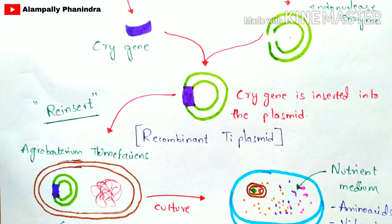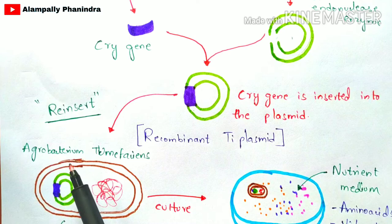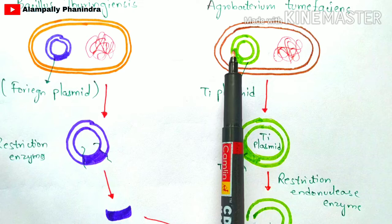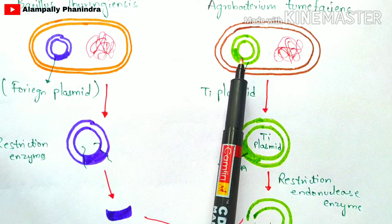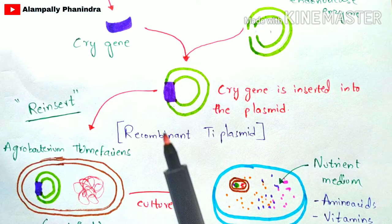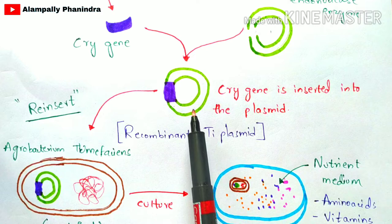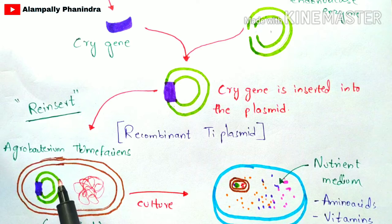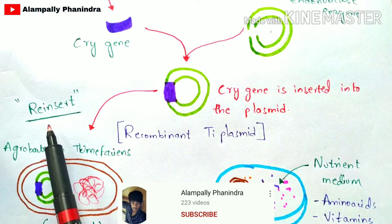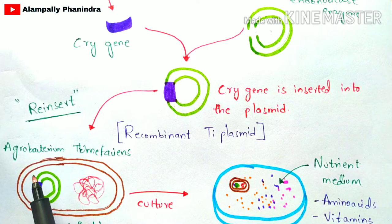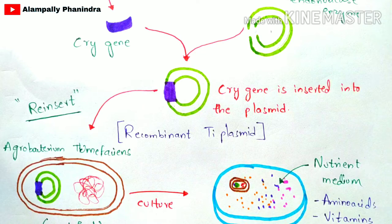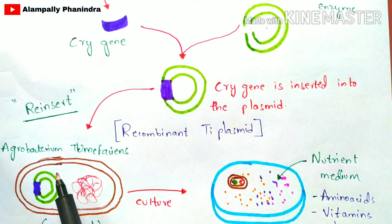Now the recombinant Ti plasmid has been formed. The Agrobacterium tumefaciens from which the Ti plasmid was previously extracted now has an empty space. This recombinant Ti plasmid is reinserted into that Agrobacterium tumefaciens to fill the empty space. Therefore, this Agrobacterium tumefaciens bacterium has now been modified, as it contains the recombinant Ti plasmid with the cry gene.